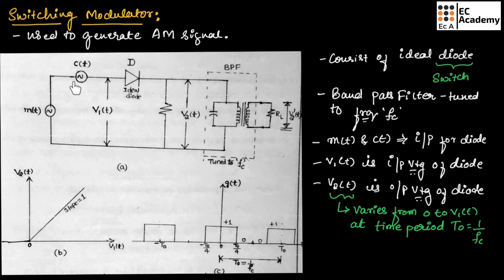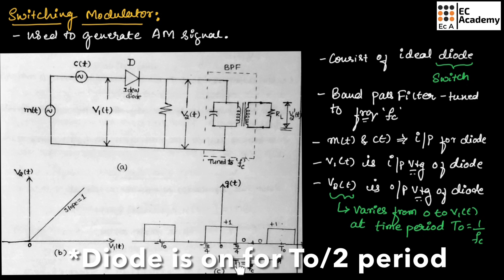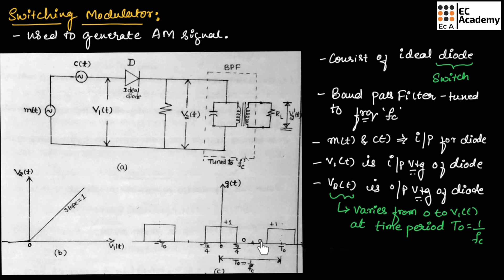During the positive half of the carrier signal, the diode will be on, and during the negative half of the carrier signal, the diode will be off. That is shown by the control signal, where the diode is on for the period T0 and off when the carrier signal has a negative half. This graph shows the relationship between input voltage and output voltage: during the positive half of the input cycle, output voltage depends on input voltage linearly, and during the negative half, output voltage will be 0.